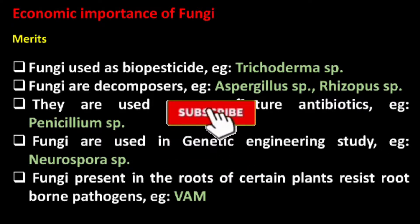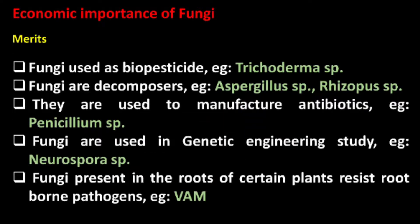First, we will discuss the uses of fungi. Fungi are used as biopesticides — example: Trichoderma. Fungi are decomposers — example: Aspergillus, Rhizopus. Fungi are used to manufacture antibiotics — example: Penicillium species. Fungi are used in genetic engineering studies — example: Neurospora species. Vesicular arbuscular mycorrhizae present in the roots of some plants resist root-borne pathogens.